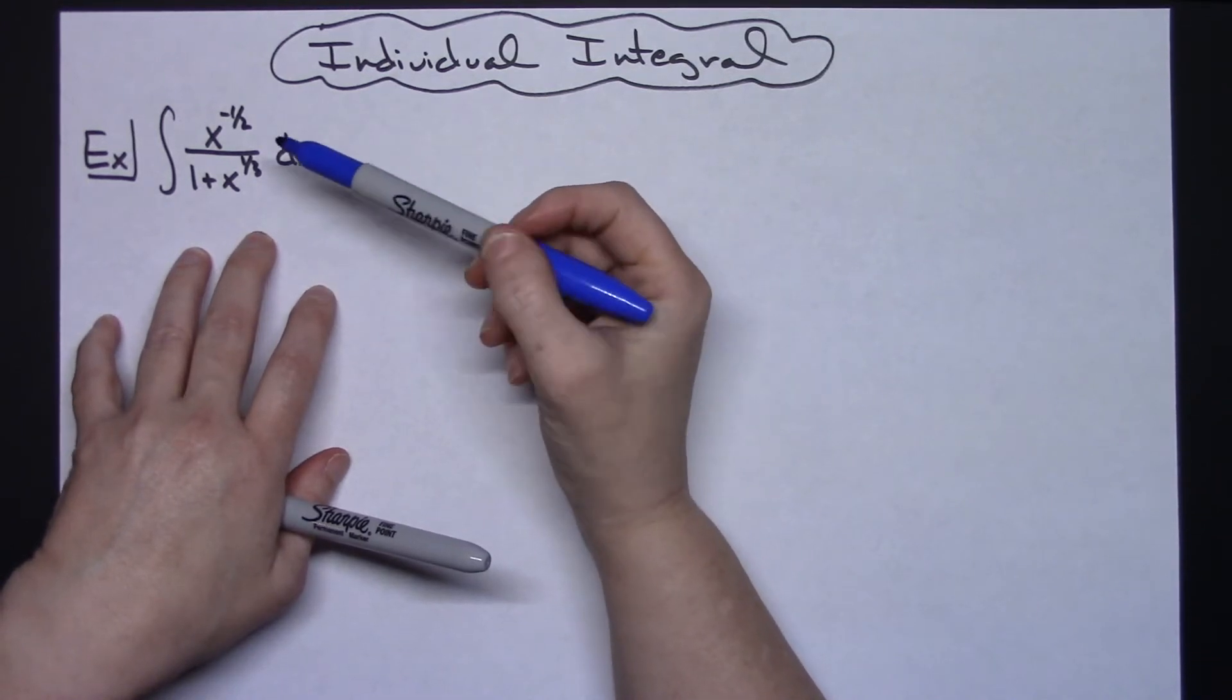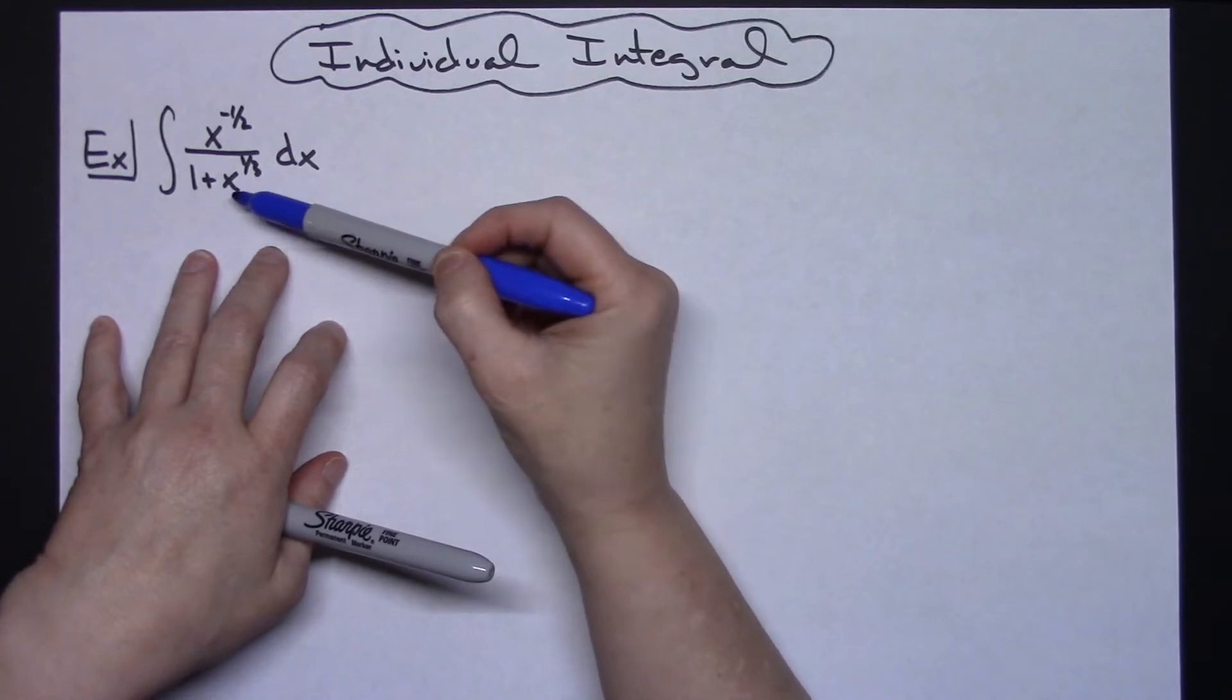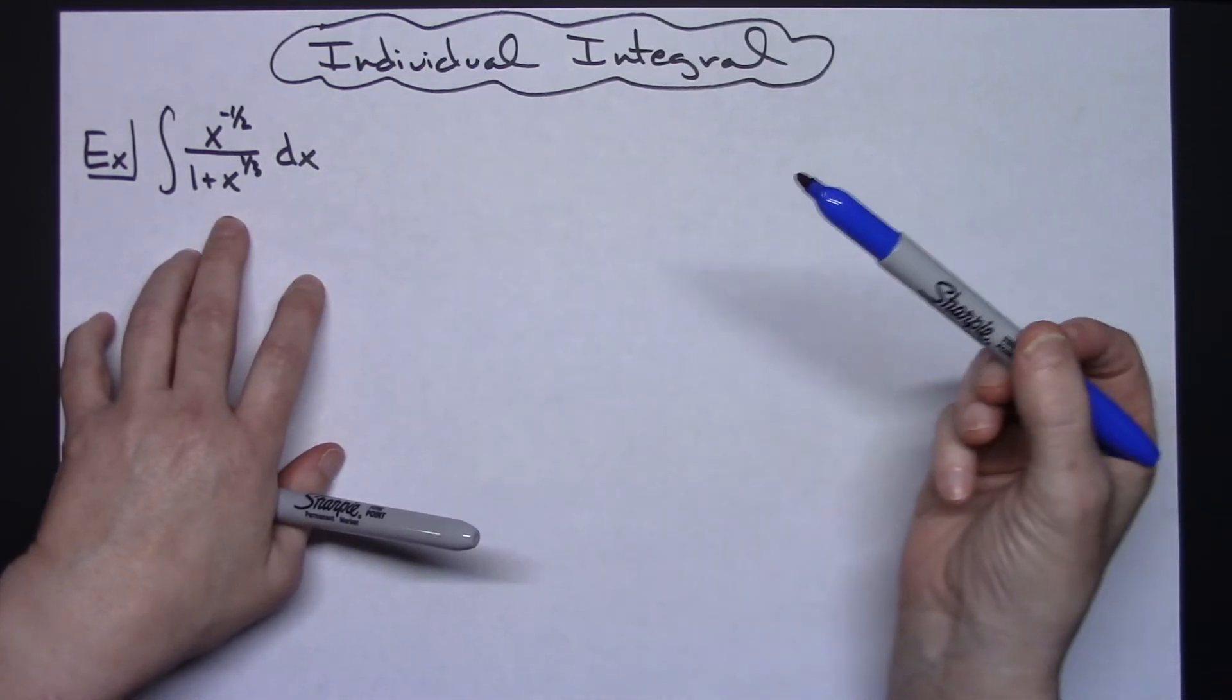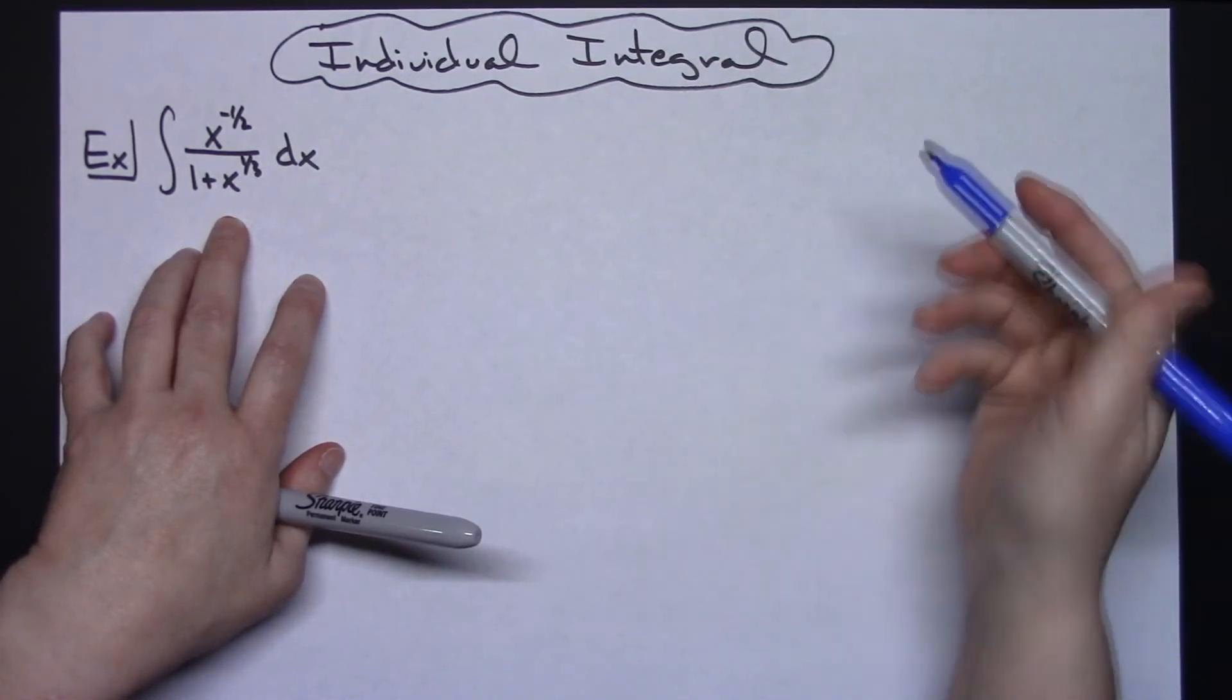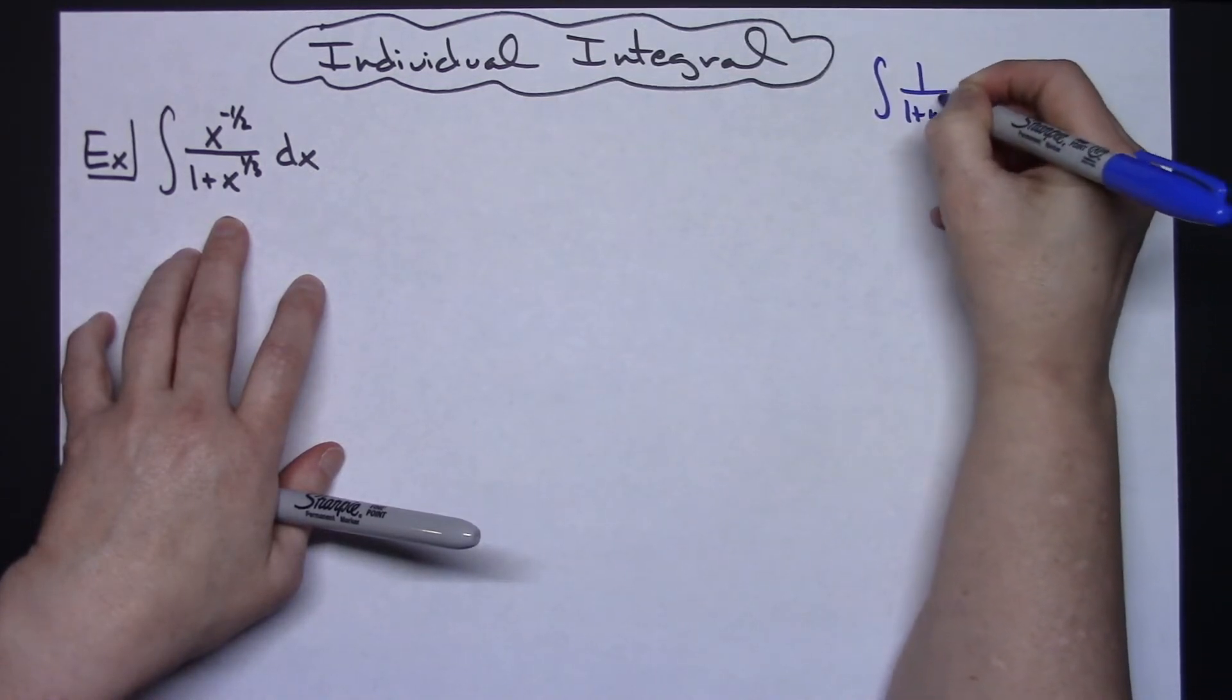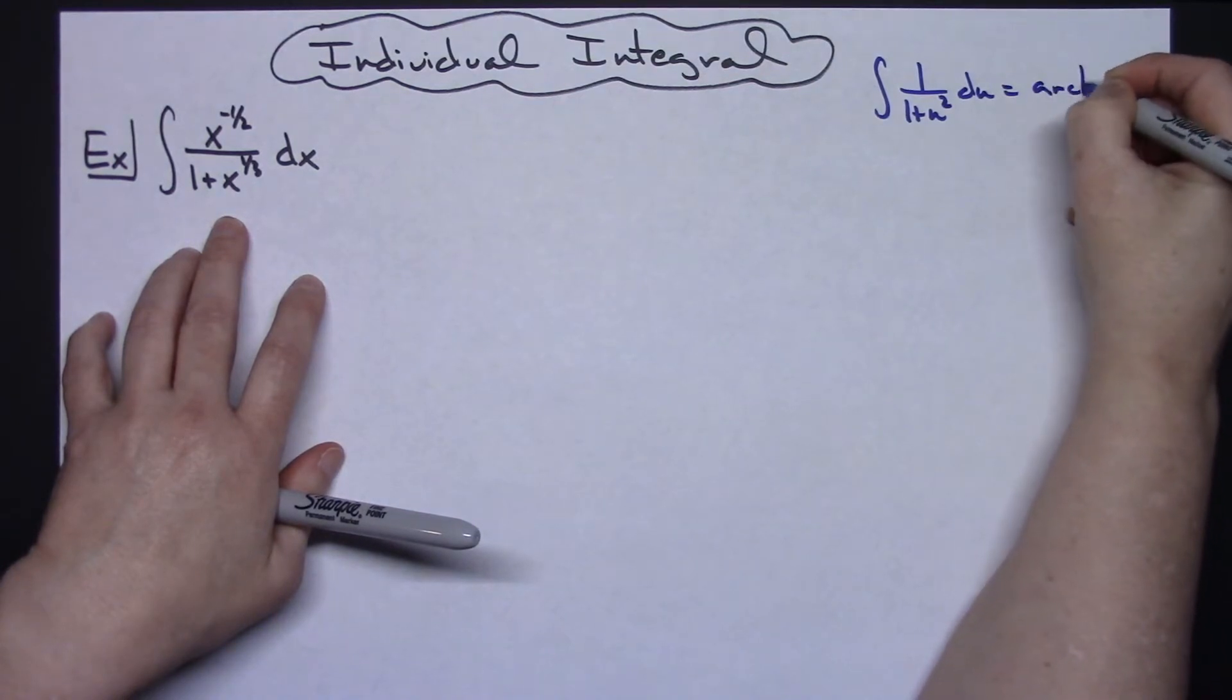Now to start out with, I'm going to take a look at that denominator, and I'm going to see that I've got a 1 plus an x raised to a power. And then I'm going to think about all the different integrals that I know as far as formula goes, and then recall that the integral of 1 over 1 plus u squared du is going to give me that arc tangent.